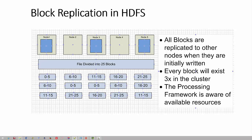Blocks 0 to 5 are replicated to node 3 and node 5. All blocks that make up the file are replicated in the same way. The end result is that every block of the file now exists on two other nodes. This has benefits for resilience, as we will see in a moment, and it also has benefits for processing.